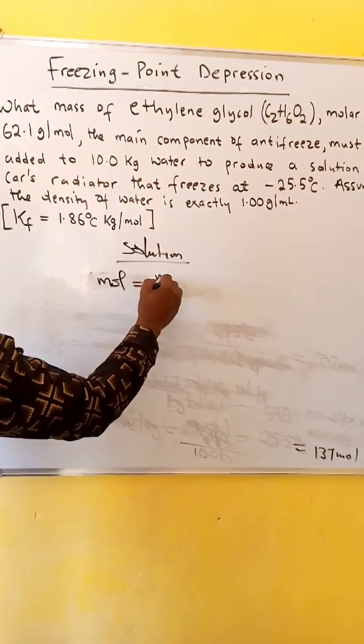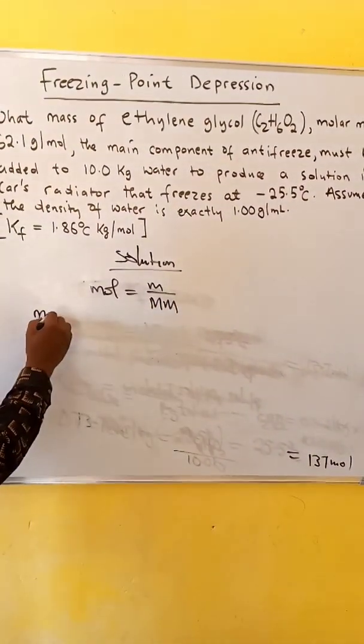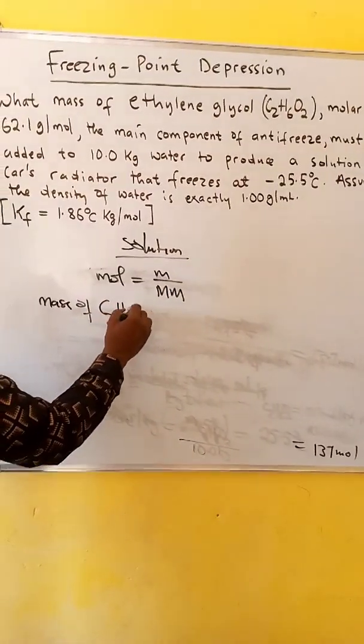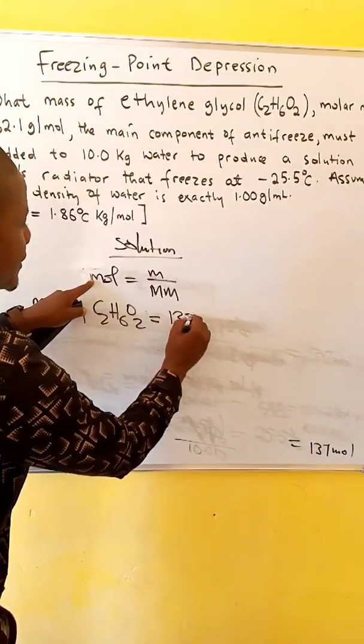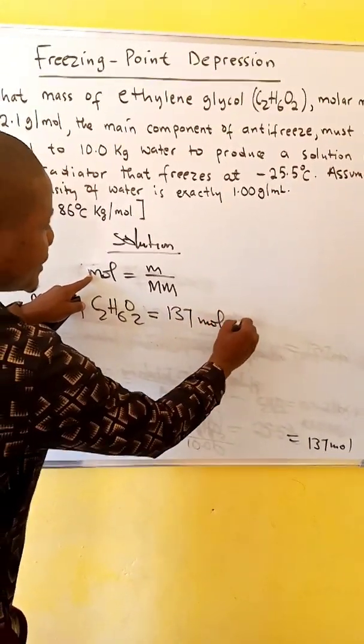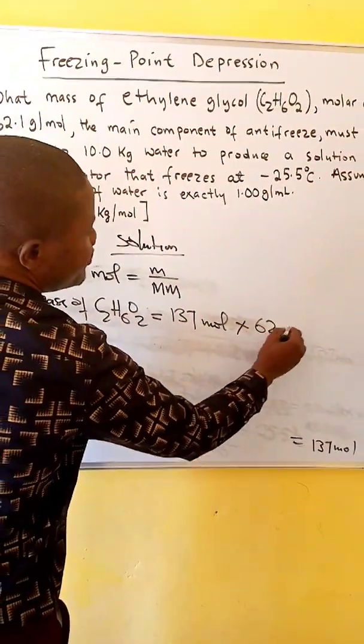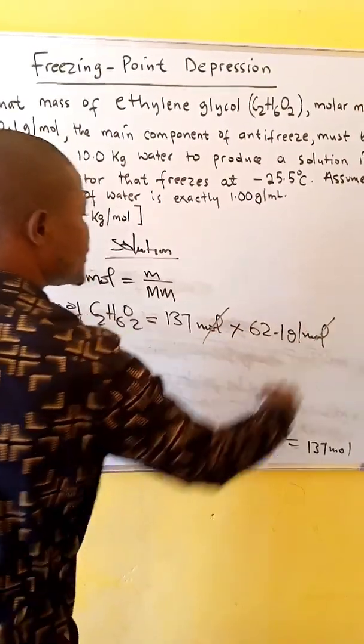We know that moles is equal to mass over molar mass. Mass of ethylene glycol is equal to moles, which is 137 moles times molar mass. The molar mass given is 62.1 gram per mole. So the moles will cancel.